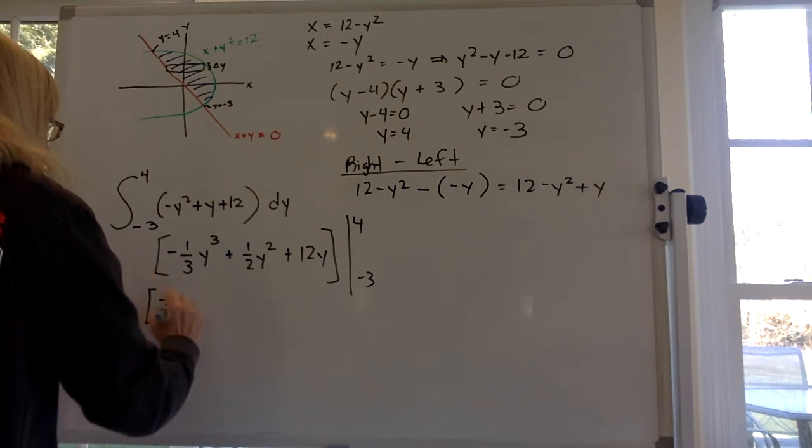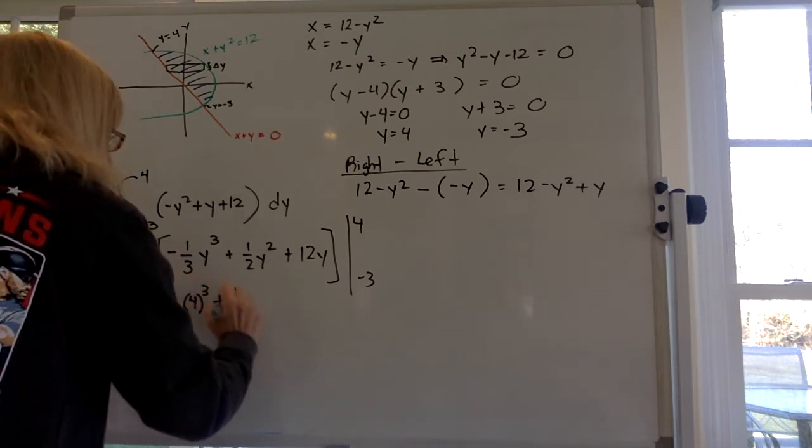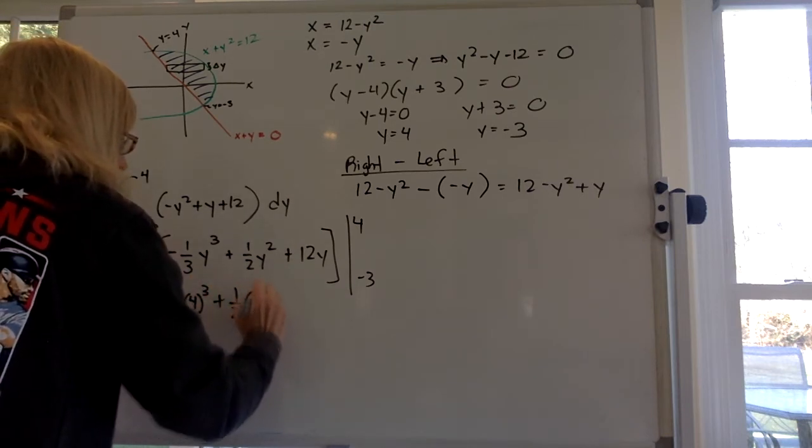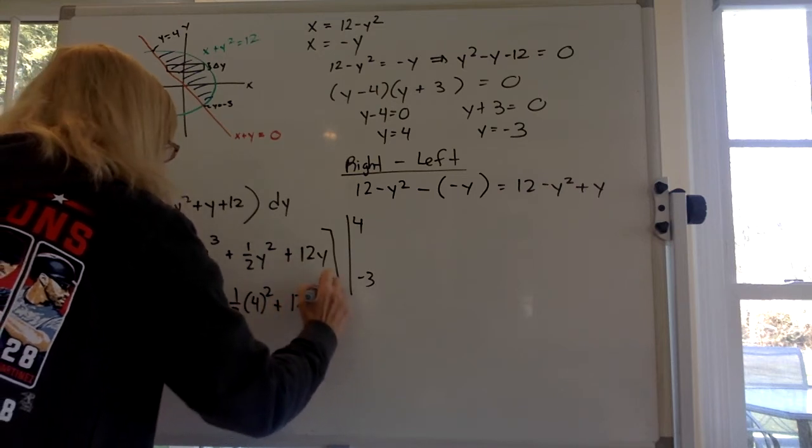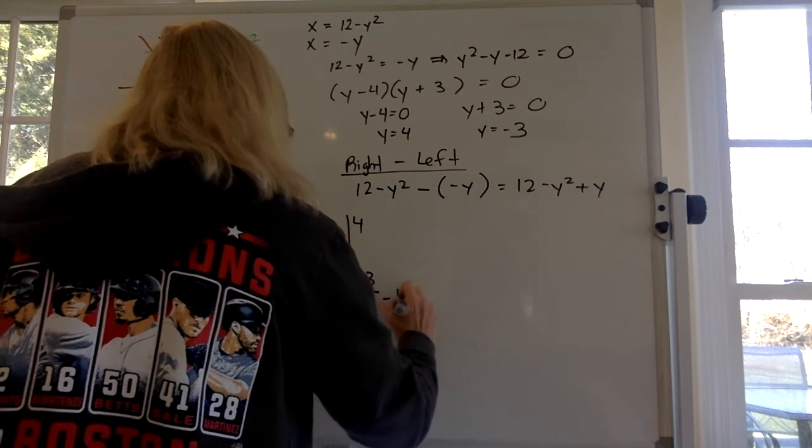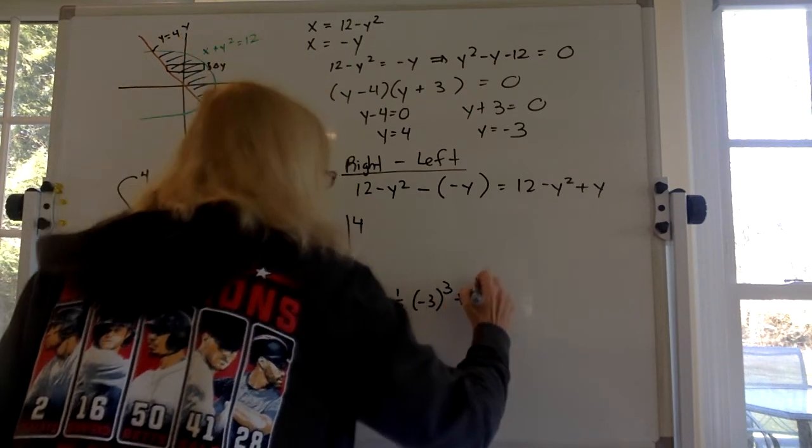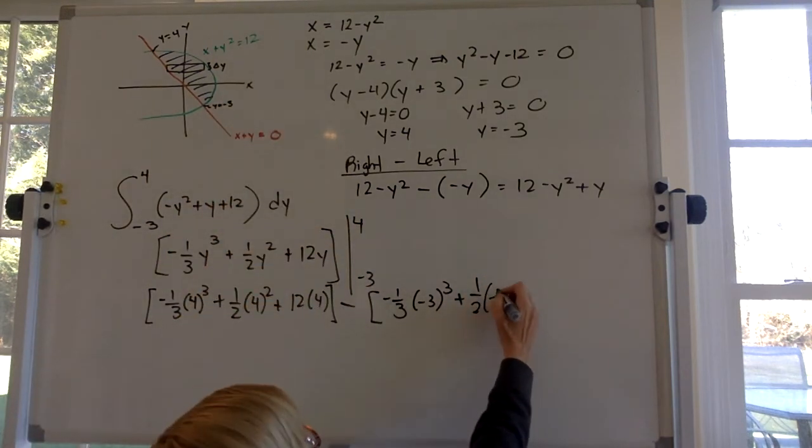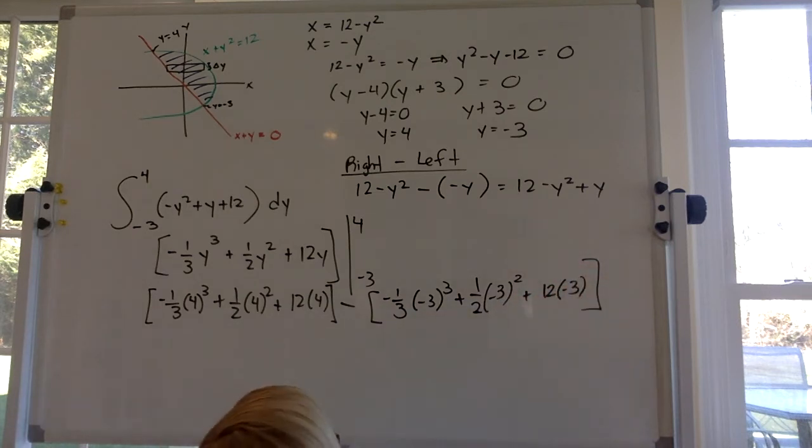Negative 1 third, 4 cubed, plus 1 half 4 squared, plus 12 times 4, minus negative 1 third, 3 cubed, plus 1 half, negative 3 squared, plus 12 times negative 3. Right? I think I did that right.